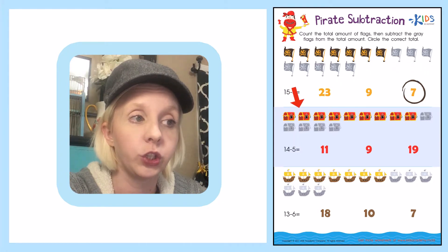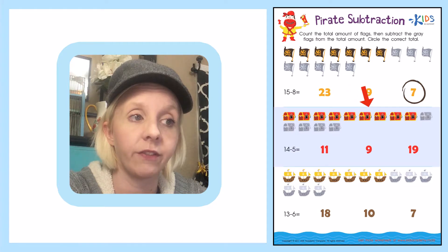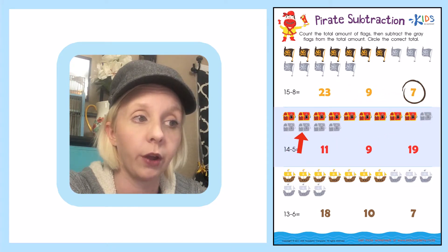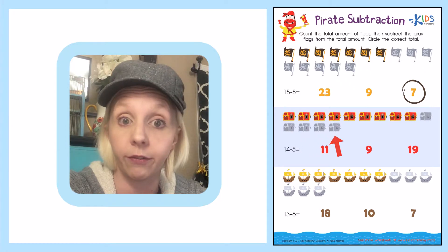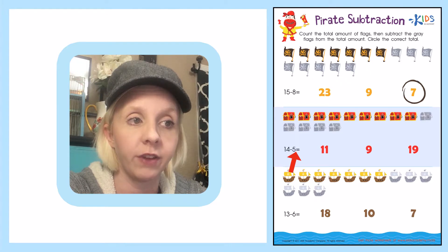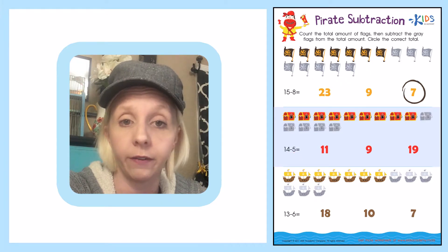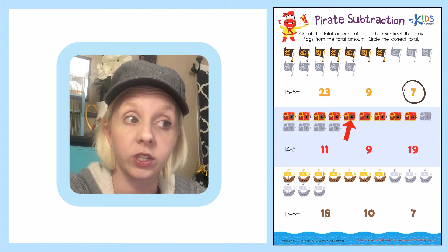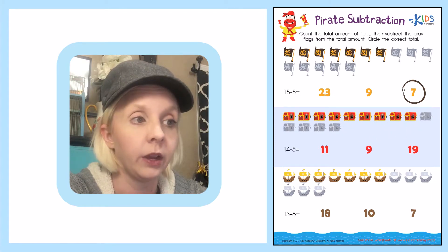We have 1, 2, 3, 4, 5, 6, 7, 8, 9, 10, 11, 12, 13, 14. So we have 14 total treasure chests. We want to subtract 5 and they've already grayed out those 5 for us. So we're just going to count up what's left over. Count with me. Here we go.